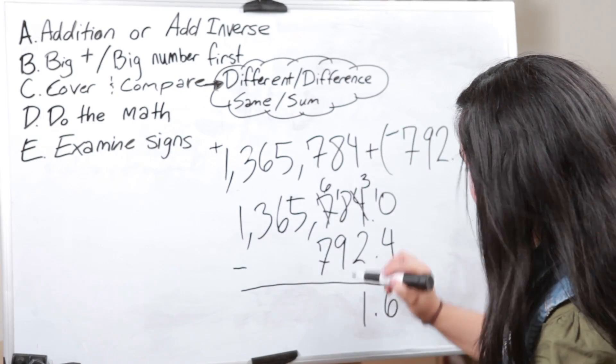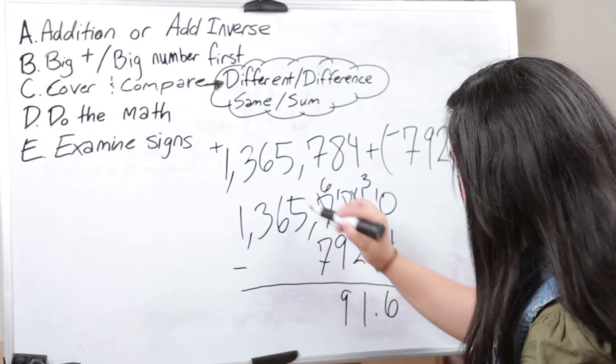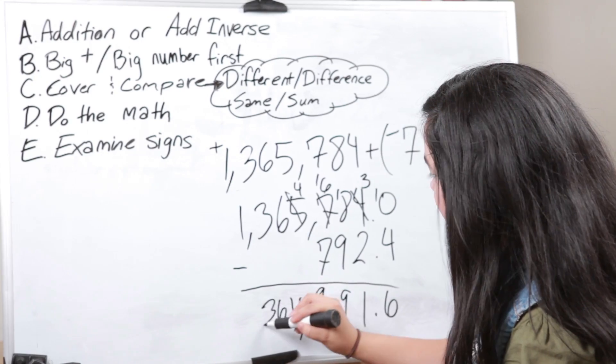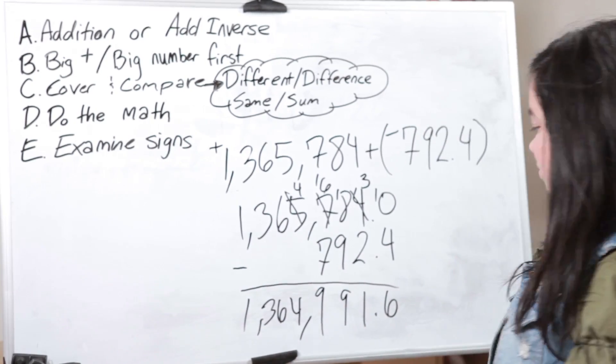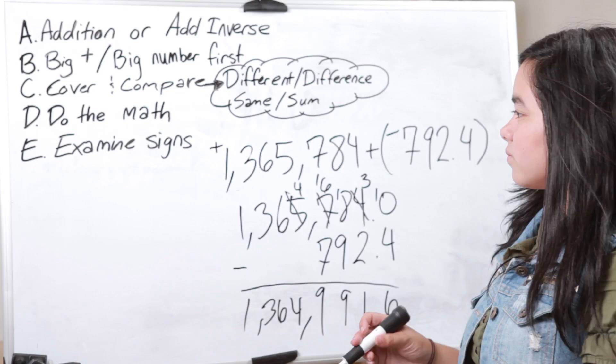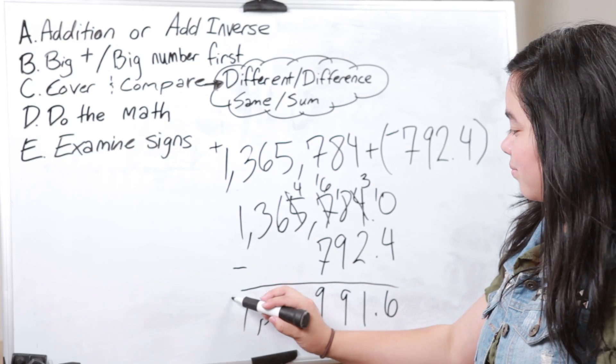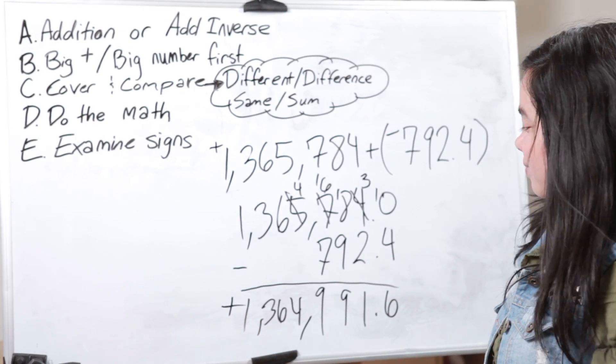D — do the work. E — examine the sign. The bigger number is positive, therefore it remains positive. So yes, indeed, that is the answer. Easy peasy lemon squeezy with my ABCDEs. ABCDEs are with me in my time of need.